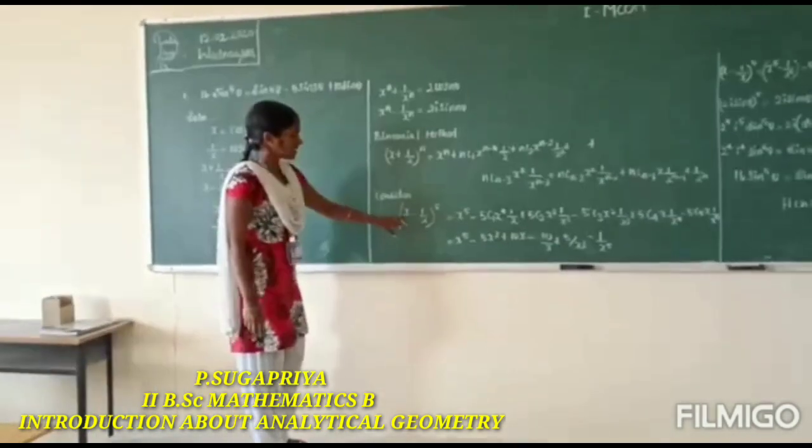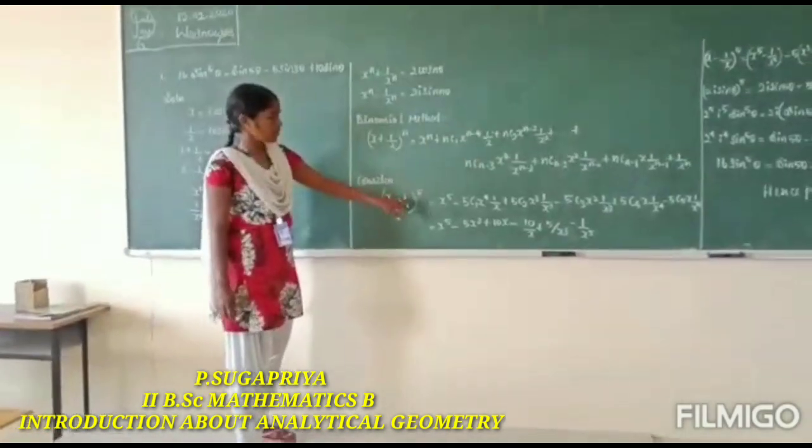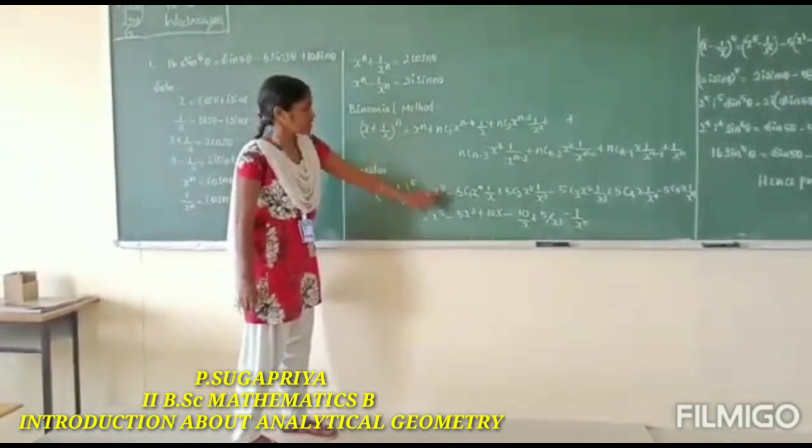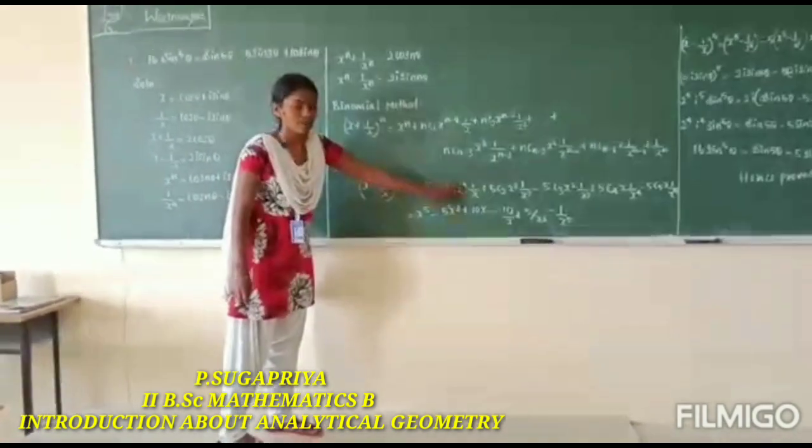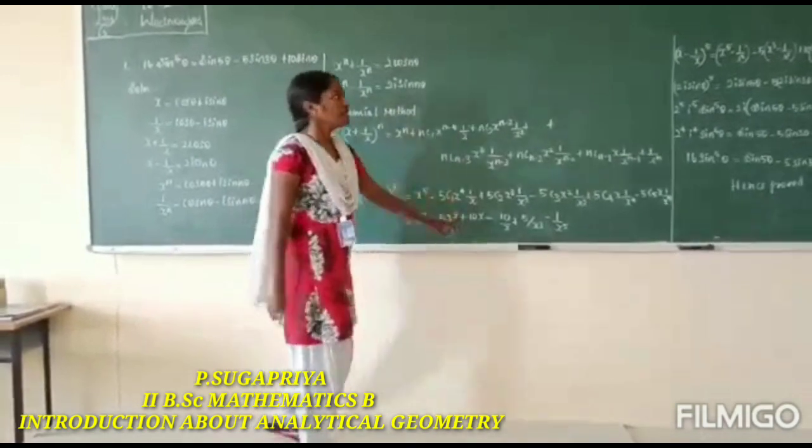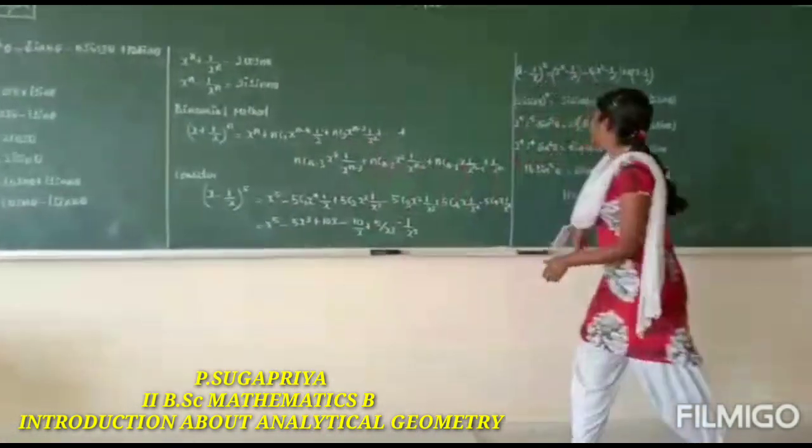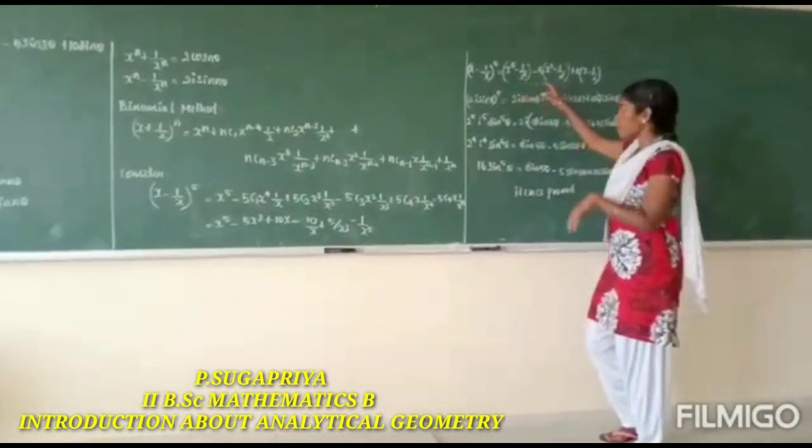Then it gives (x minus 1 by x)^5 equals x^5 minus 5C1 times 1 by x^5, etc. Then we take common levels.